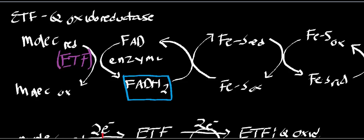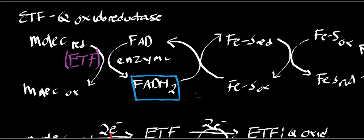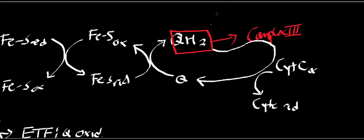So let's regroup. Some molecule gets oxidized by an enzyme, and the electrons go to the electron-transferring flavoprotein. Then those electrons get shuttled to electron-transferring flavoprotein:ubiquinone oxidoreductase, where they're put onto FAD to make FADH2. That FADH2 transfers electrons to a series of iron-sulfur centers, very similar to succinate dehydrogenase. The ultimate goal is to reduce ubiquinone to ubiquinol, which then goes to complex III.